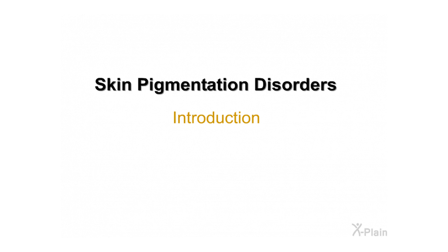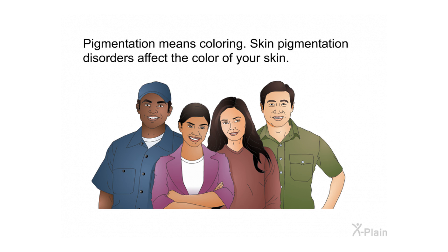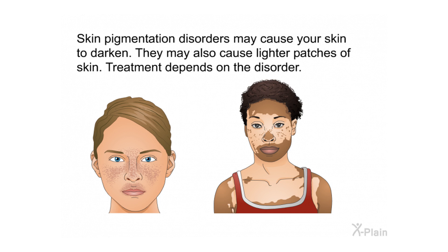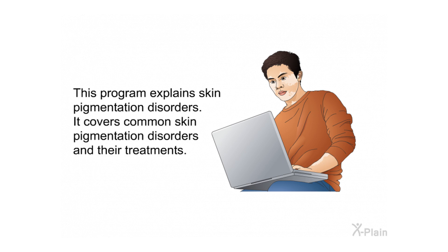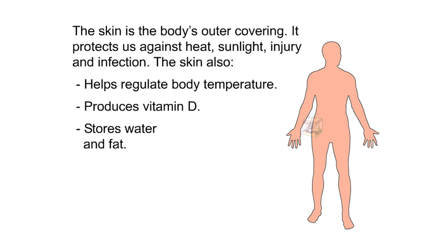Skin pigmentation disorders — introduction. Pigmentation means coloring. Skin pigmentation disorders affect the color of your skin. They may cause your skin to darken or cause lighter patches of skin. Treatment depends on the disorder. This program explains skin pigmentation disorders and covers common skin pigmentation disorders and their treatments.